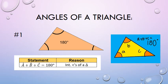Let's look at our first statement and reason. Number one: if you look at any triangle, what is special about a triangle is that all three angles inside add up to 180 degrees. So if you had to write up the statement, you say A plus B plus C is equal to 180 degrees, and your reason is interior angles of a triangle. With any triangle, no matter what type, all three angles inside always add up to 180 degrees.